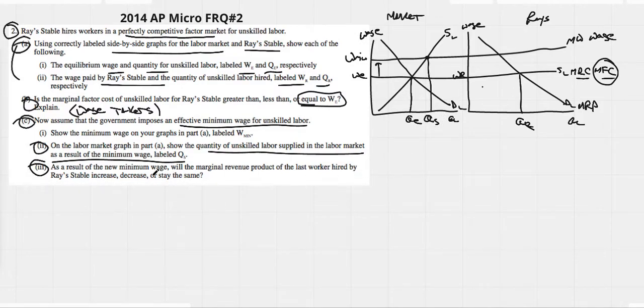As a result of the new minimum wage, will the marginal revenue product of the last worker hired by Ray's stable increase, decrease, or stay the same? This is a bit of a tricky question, right?